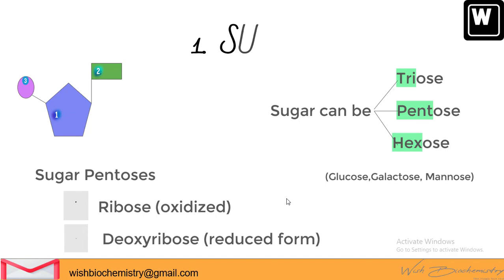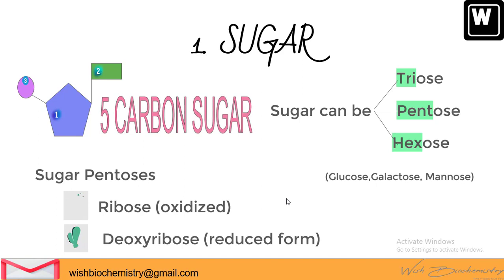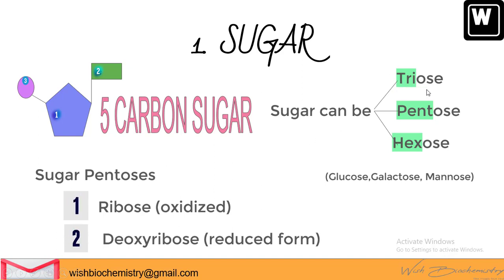First is the sugar group. In nucleotides, the sugar is pentose. The sugars present inside our body are named after the number of carbon atoms in them. Tri stands for three, hence triose contains 3 carbons. Pent is for 5, so pentose is the 5-carbon sugar.